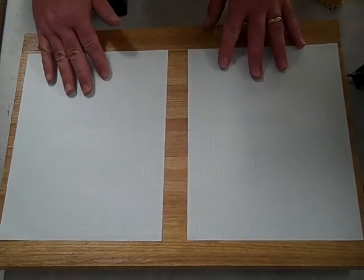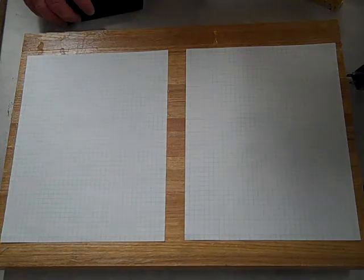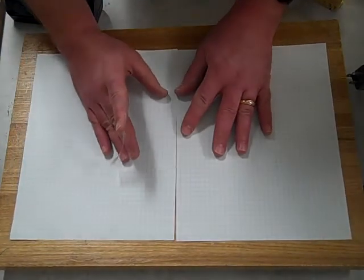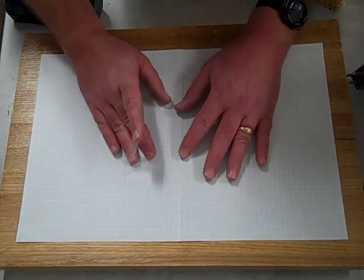So first thing you need to do is grab two pieces of graph paper and you grab some tape and you're going to overlap it above one to two squares. Make sure you do this on the long side.